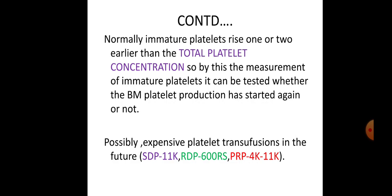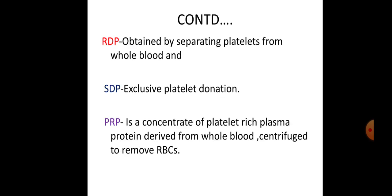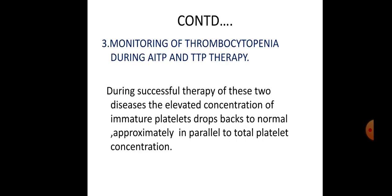Platelet transfusion can be of three types: single donor platelet rich plasma (SDPR), random donor platelets (RDP), and platelet-rich plasma (PRP). RDP can be obtained by separating platelets from whole blood, while SDPR — single donor platelet-rich plasma — is the concentrate of platelet-rich plasma protein derived from whole blood and centrifuged to separate the components. The most commonly used type is SDPR.